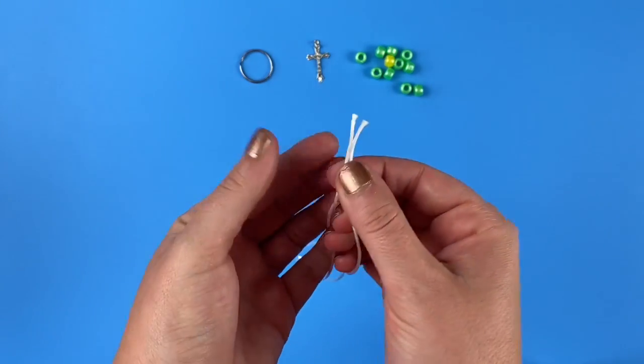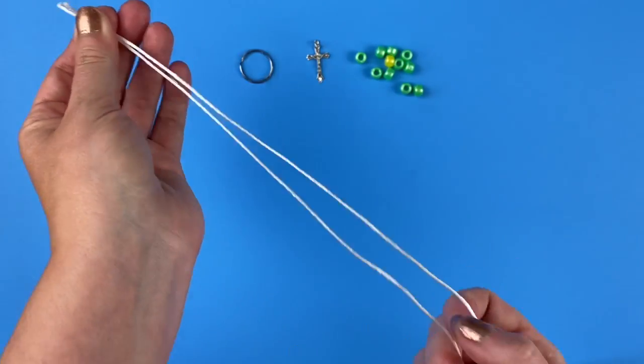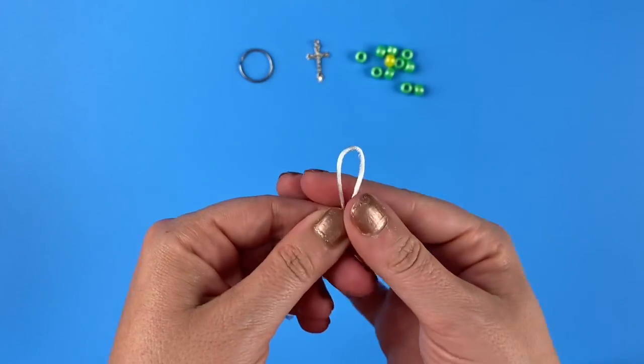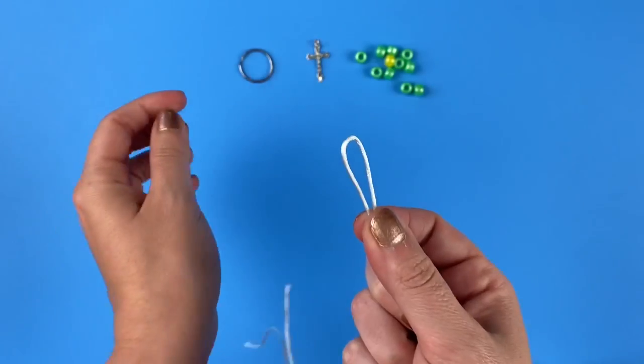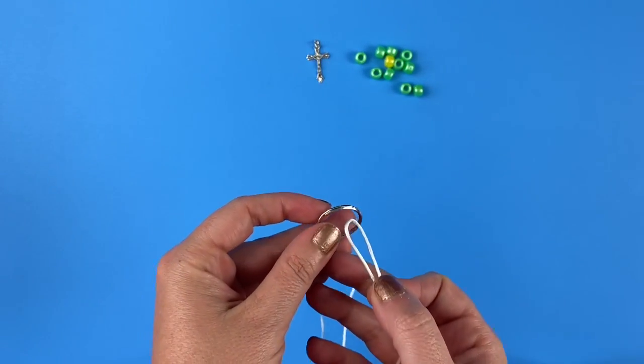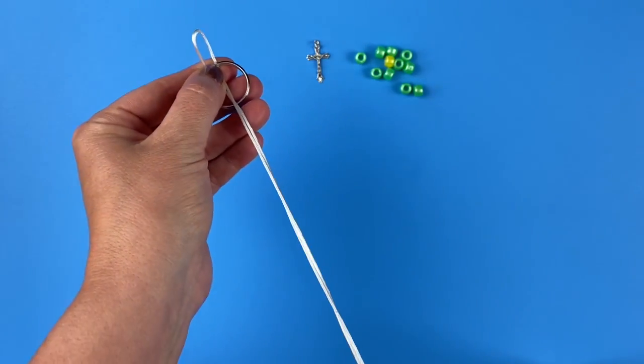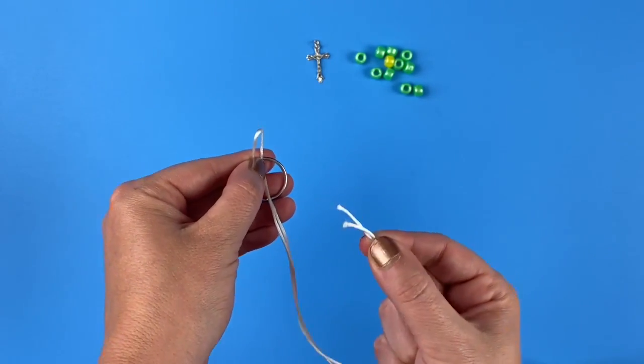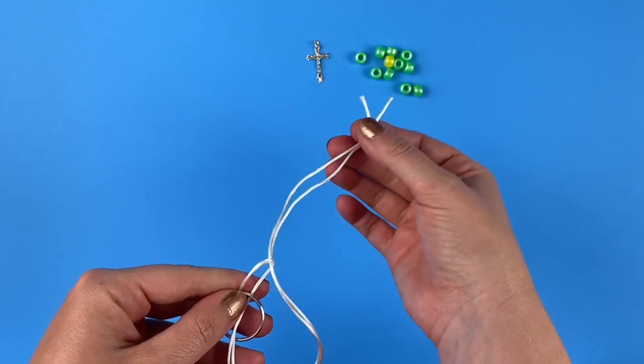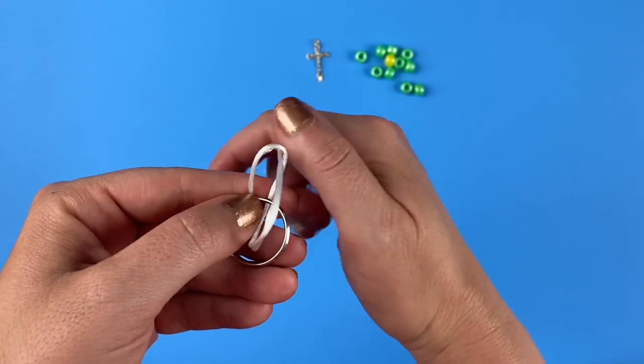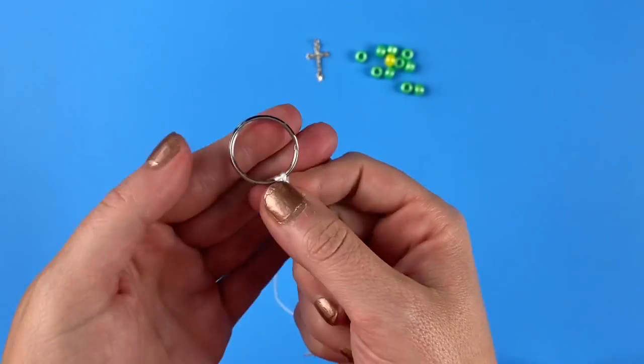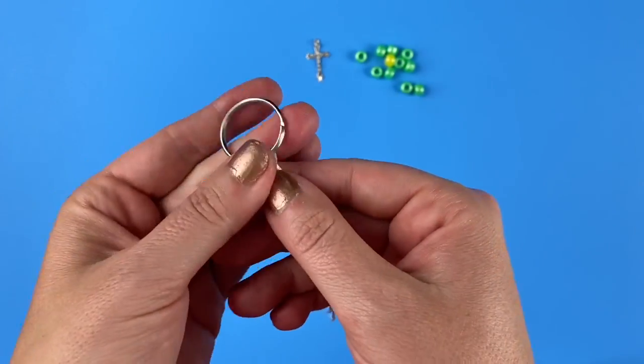So now you're going to take your piece of string and line up the two ends, then pull it straight to find the middle part of your string. So this is the middle, and now I have a little loop. So I'm going to take my key ring or your St. Therese medal, put the loop through the hole, then take your two ends of your string and put them both through the loop. Then when you pull that tight, your string will be connected to your ring, and then you have two strings that are the same length that are ready to go with your beads.